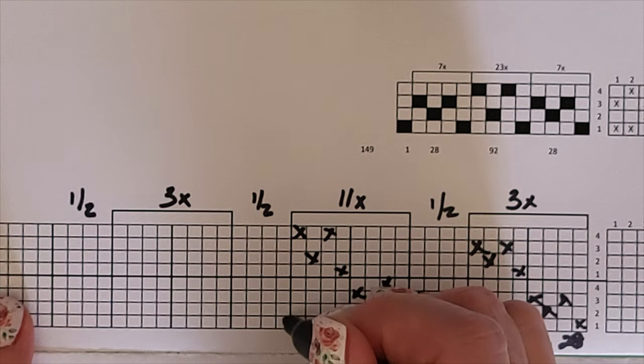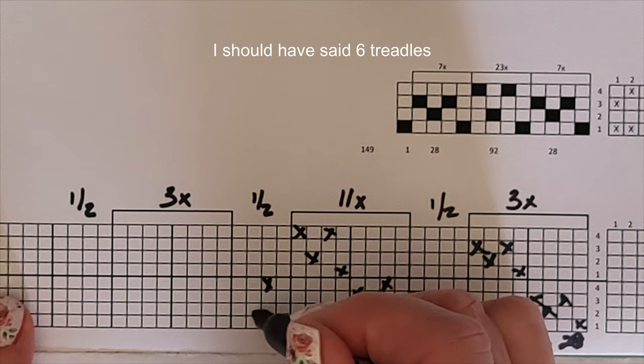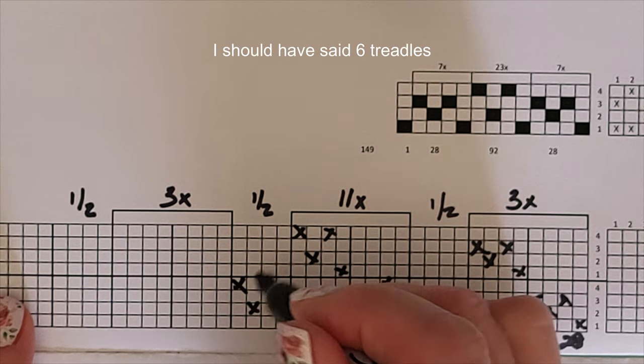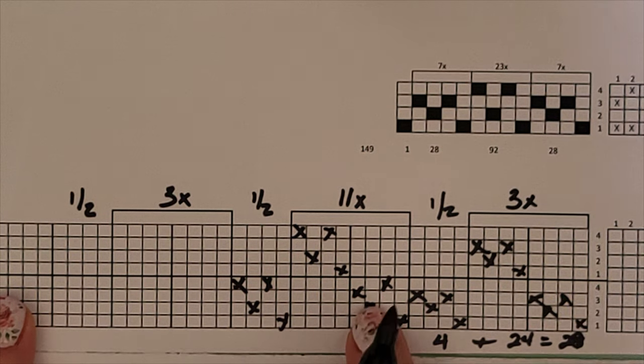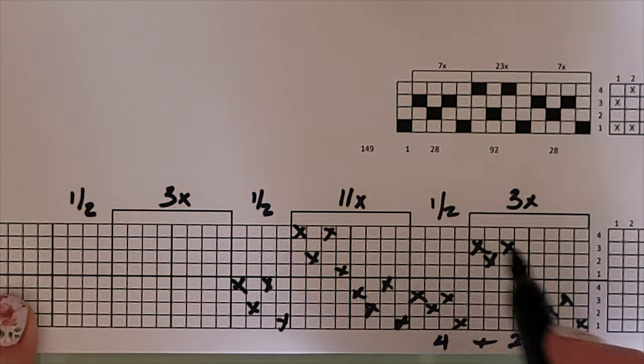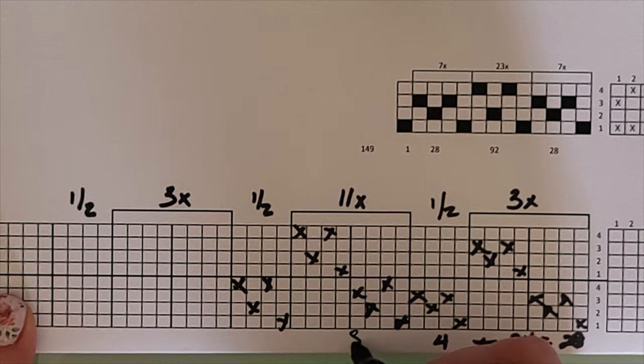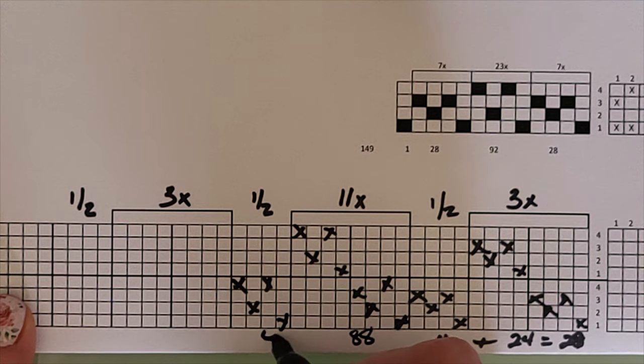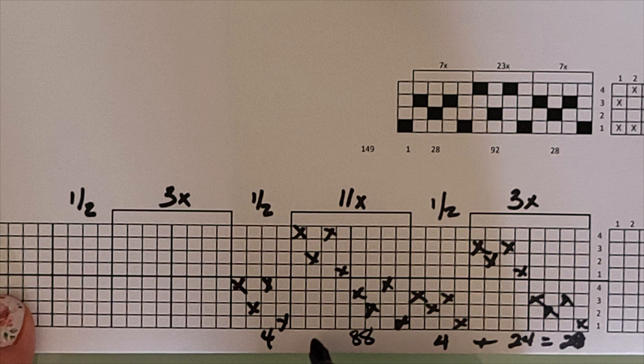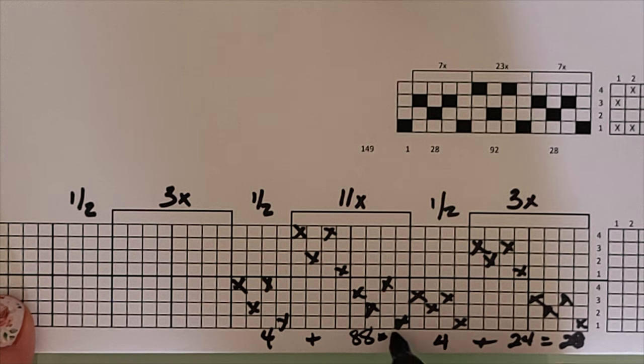And we will do the half repeat over here. And that one is done. 11 times 8 is 88 plus 4. That is 92.